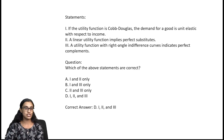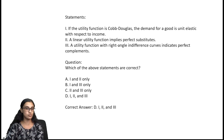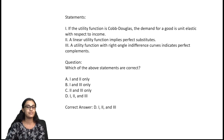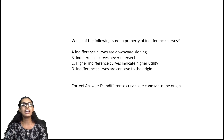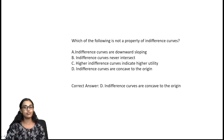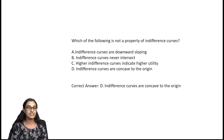If the utility function is Cobb-Douglas, demand for a good is unit elastic with respect to income. A linear utility function implies perfect substitutes. A utility function with a right-angled indifference curve indicates perfect complements — the right answer is option B. For properties of indifference curves: they are downward sloping, never intersect, higher indifference curve indicates higher utility, and indifference curves are concave to the origin — option D is the right answer.